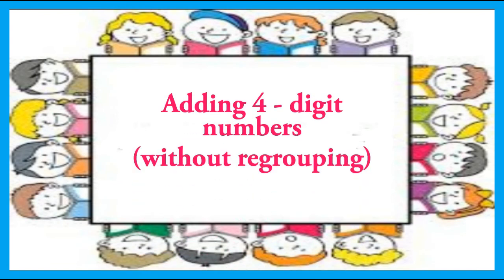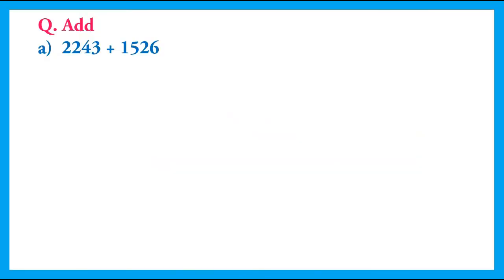Welcome students. Today we will learn how to add 4-digit numbers without regrouping. We have to add 2243 with 1526. So, what is the first step? First of all, we will write these 4-digit numbers below their place values.